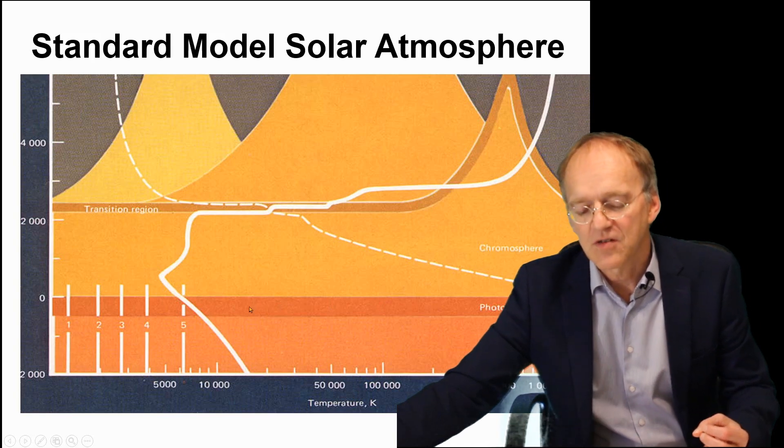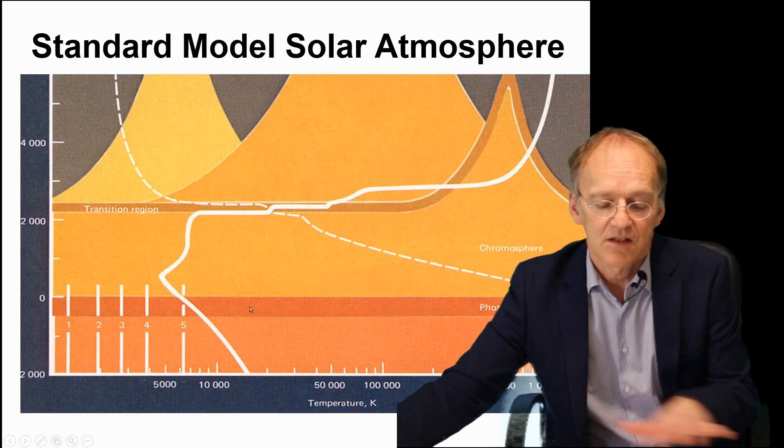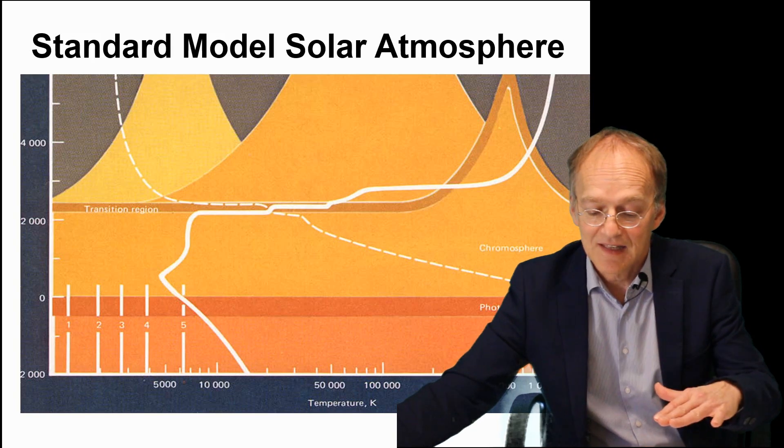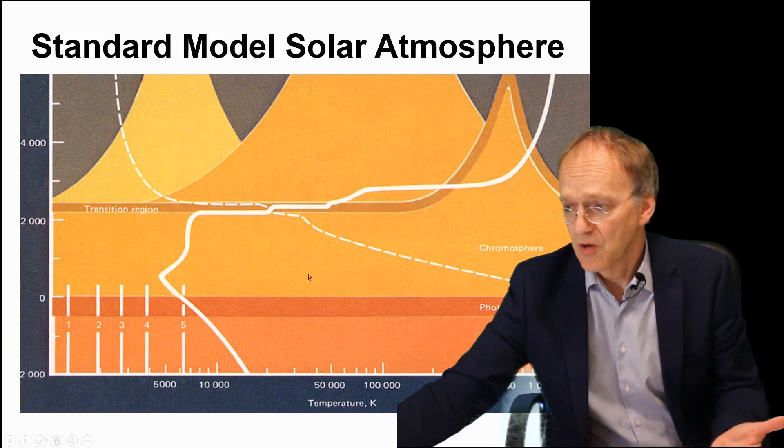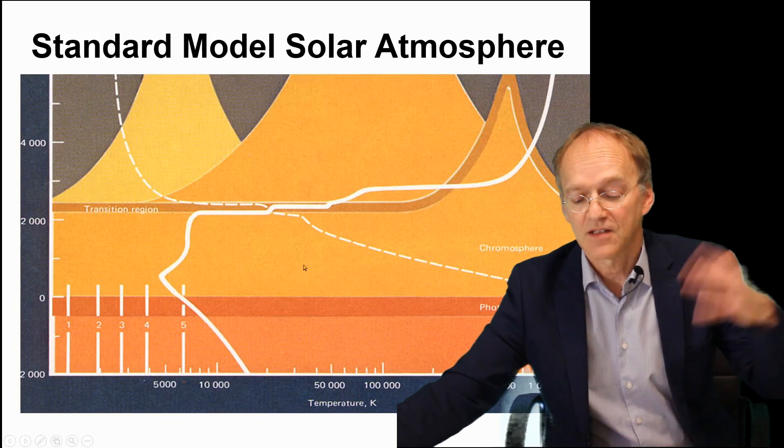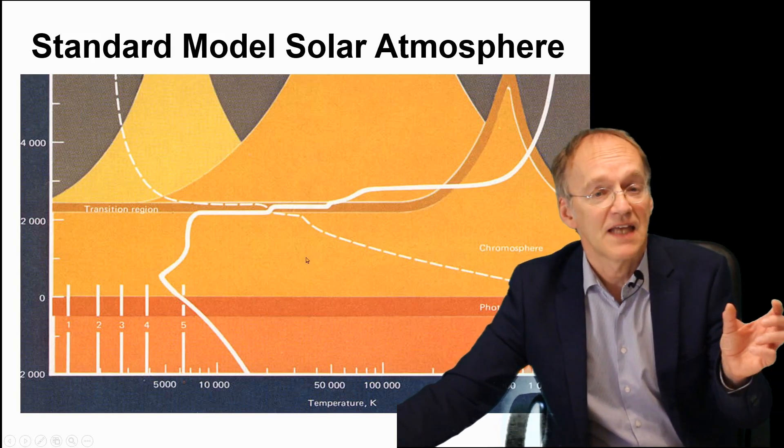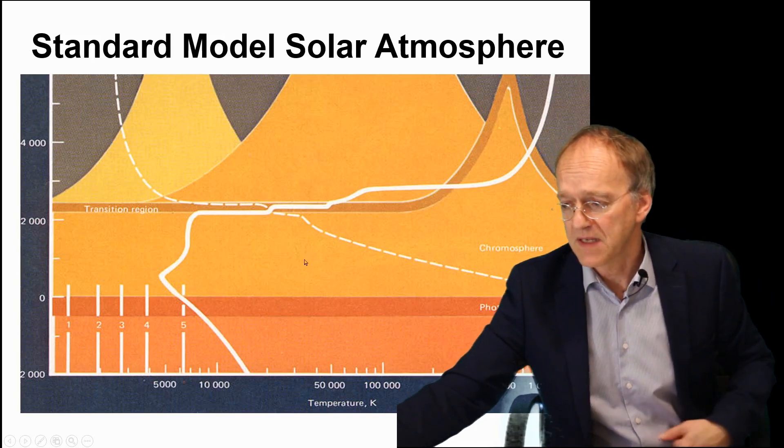This photosphere is totally opaque, totally intransparent - it just emits light from the surface, not from beyond. The chromosphere on the other hand is totally transparent and just has these foreign atoms we see in the Fraunhofer spectrum.